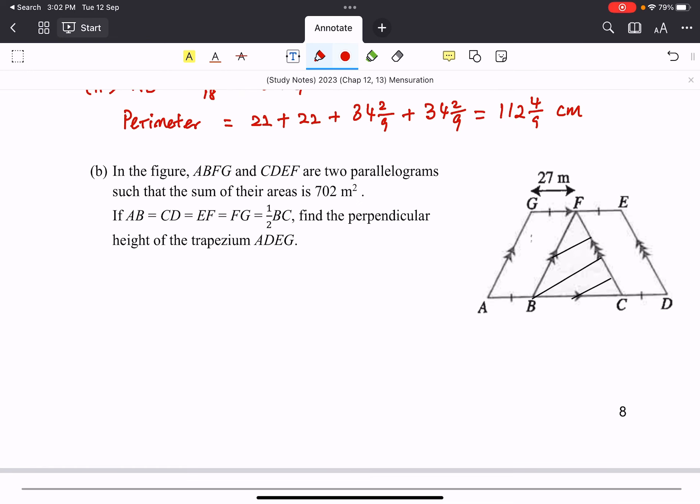Next example. Example B. So in this figure, we have two parallelograms over here, ABFG and CDEF. So what happened is the sum of the area is 702. So that's given. Then we give you some information where the lengths are the same. So they want us to find the perpendicular height. So the perpendicular height of ADEG. ADEG is actually this height over here. So if I were to extend this out to have some clarity, this will be the height that we are looking at. This is the height. So how do we figure that out?